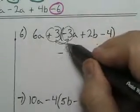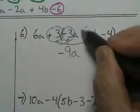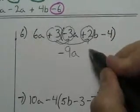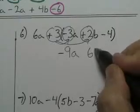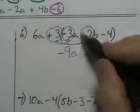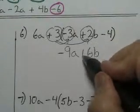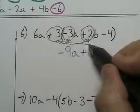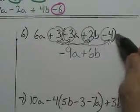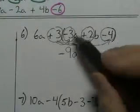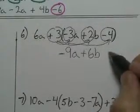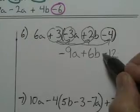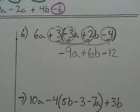Next, I'll multiply three times positive two. Three times two is six — 6b — and they're both positive, so it's positive. Now I'll multiply three times negative four. Three times four is 12, and there's one negative, so that's a minus, that's a negative.